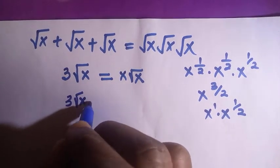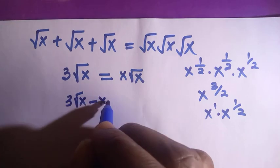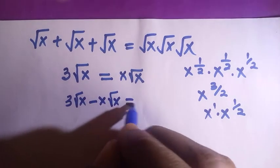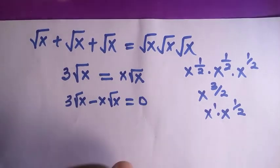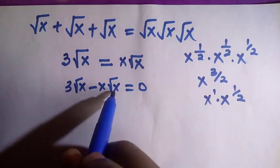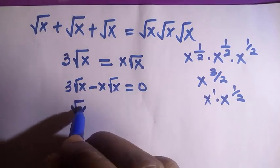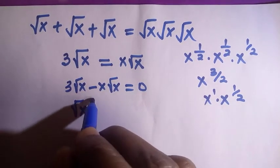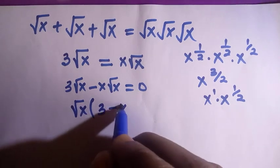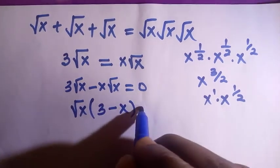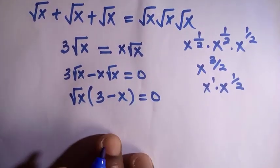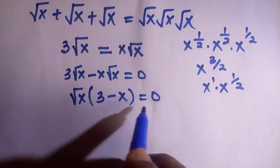Since √x is common, we take out √x and get √x(3 − x) = 0. From the zero-product rule, we let √x = 0 or we let 3 − x = 0.